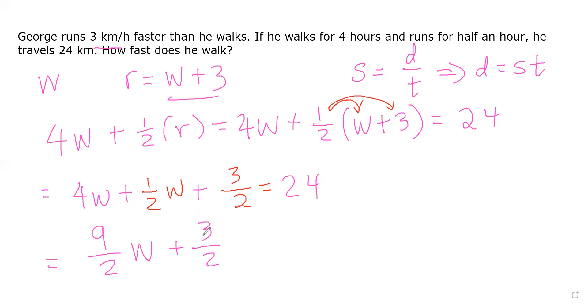Now we need to move the three over two to the right side of the equation. This is equal to 24, so we should subtract three halves on both sides of the equation. So this cancels out. Then we get nine over two w is equal to 24 minus three halves, which is 45.2.